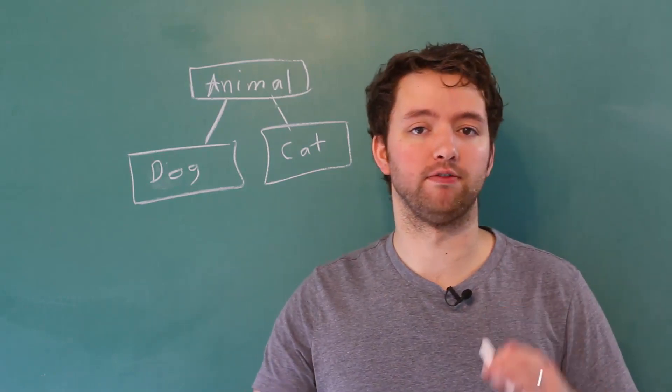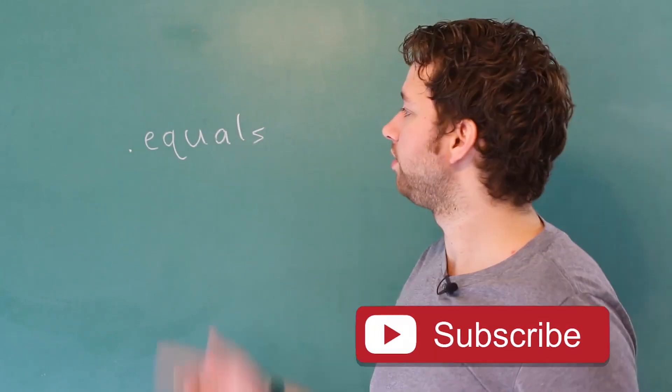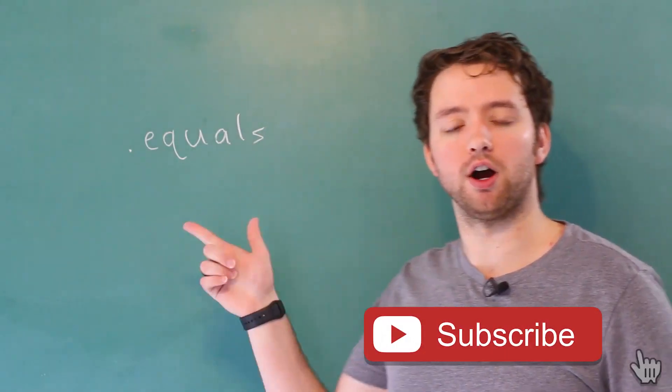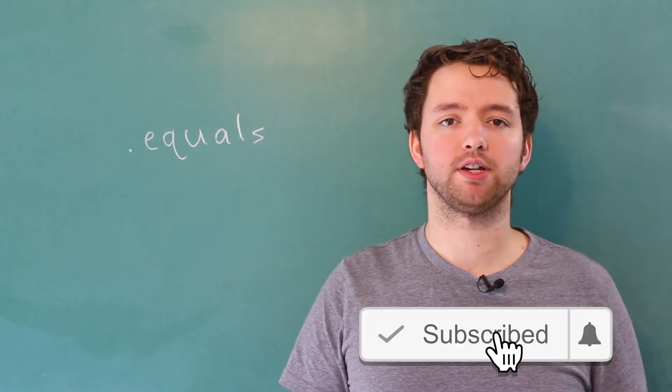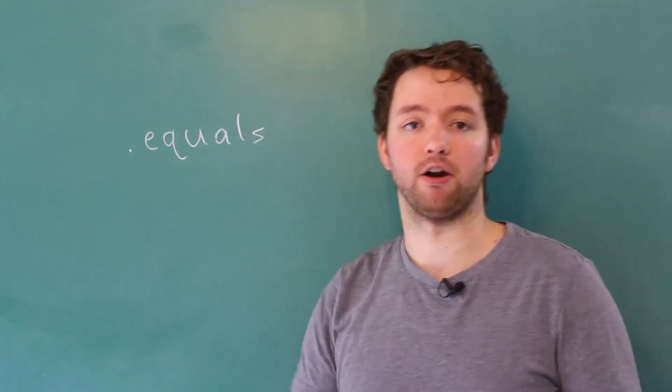In the context of the code we've been writing so far, we have used a method dot equals. And you might be wondering, where did this come from on our objects if we didn't define it ourselves? Well, this is actually inherited from that inheritance hierarchy.